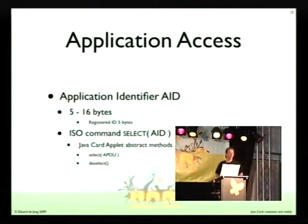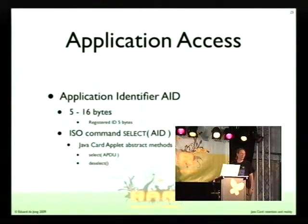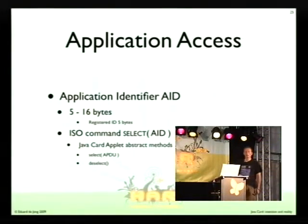Now you know how to talk to a card, you have to find out what to talk to. The thing you have to talk to is identified by five bytes at the minimum, or 16 bytes maximum, which is called the application identifier, the AID. And there's a standard command defined in the ISO standard which allows you to select the application.